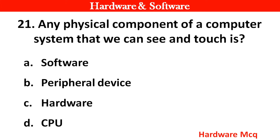Question 19: Any physical components of a computer system that we can see and touch. Options: A. (not stated), B. Peripheral device, C. Hardware, D. CPU. Right answer is option C — Hardware.